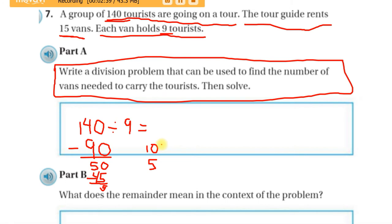Okay. So, my answer is 15. Because 10 nines for 90, 5 nines for the 45. So, 15 total nines were used with a remainder of 5. Okay. Now, let's go to part B.